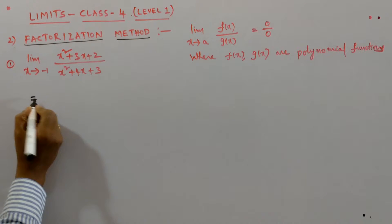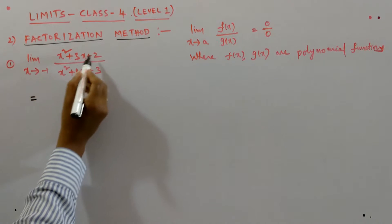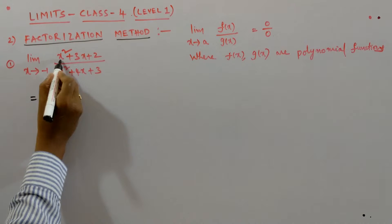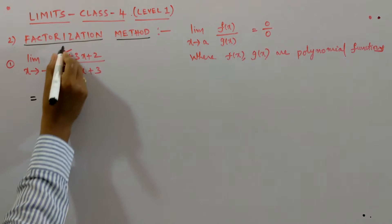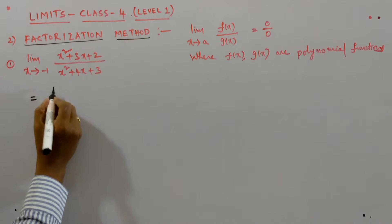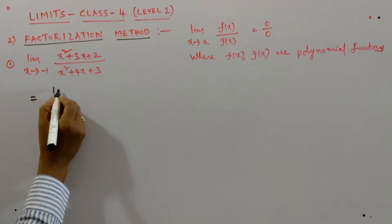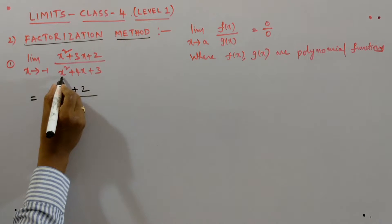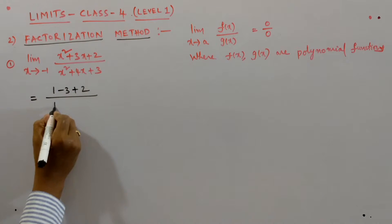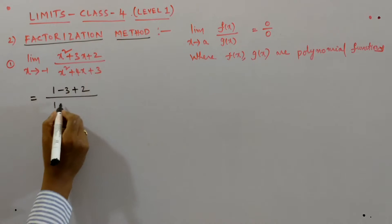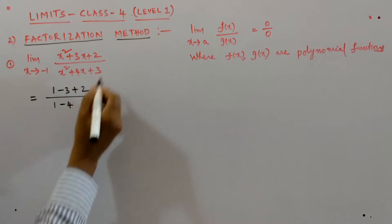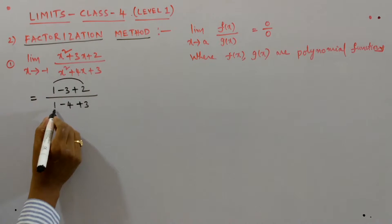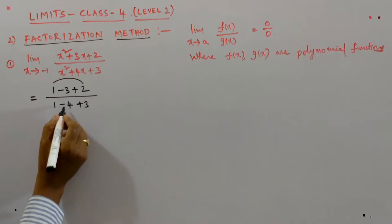In direct substitution method, put x equals to minus 1 in this function. When we put x equals to minus 1, we get minus 1 whole square. Minus 1 whole square is 1. 3 into minus 1, minus 3 plus 2 divided by minus 1 whole square — as the square is there, it will become plus 1. 4 into minus 1, minus 4 plus 3. We get: 2 plus 1 is 3; 3 minus 3 is 0. And 3 plus 1 is 4; 4 minus 4 is 0.